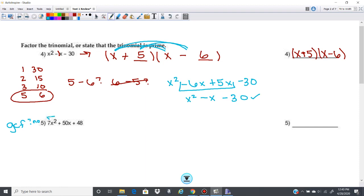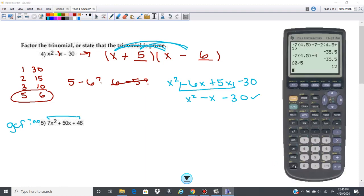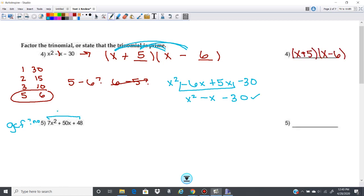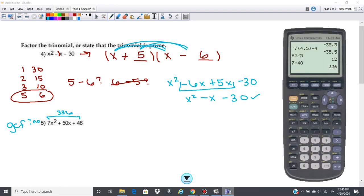So the AC method, we'll start with that one, is going to be where we take A times C. So 7 times 48. So let's go ahead and do that. 7 times 48 is 336. Well, it's going to take me a really long time to list my factors of 336. I'm just going to start working them in my calculator.